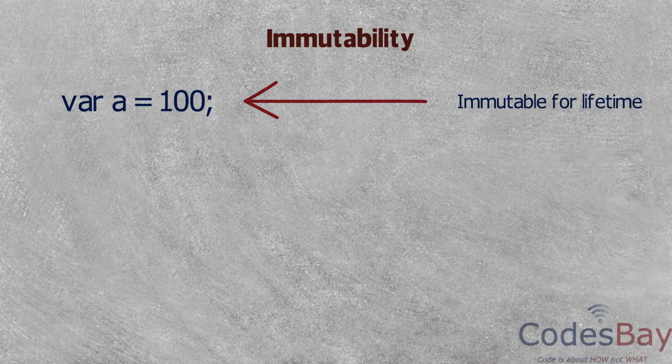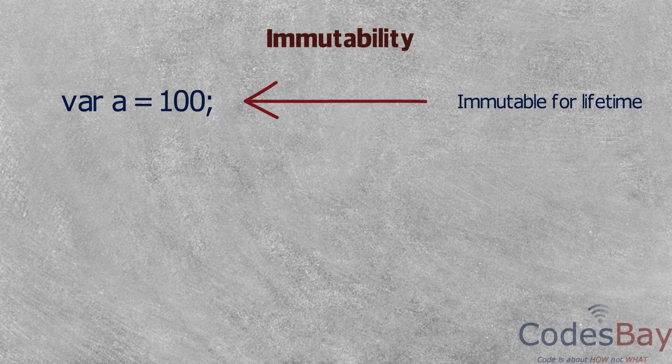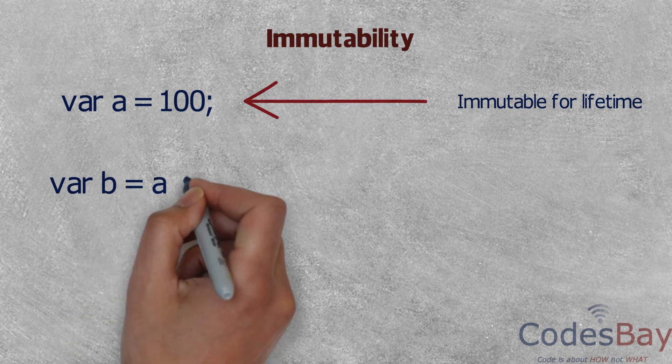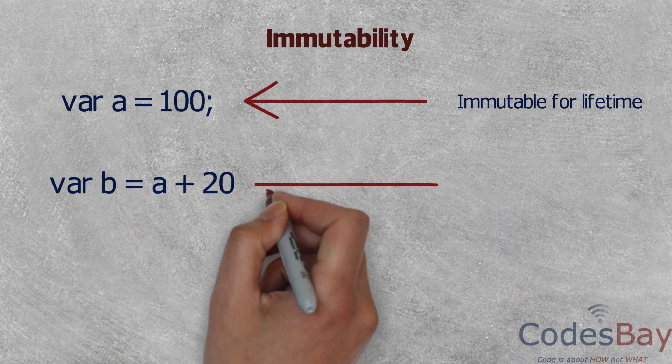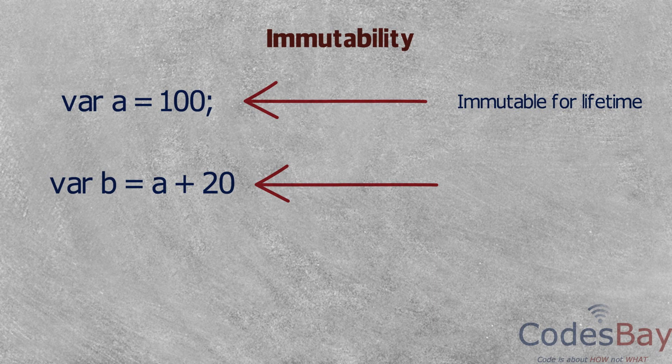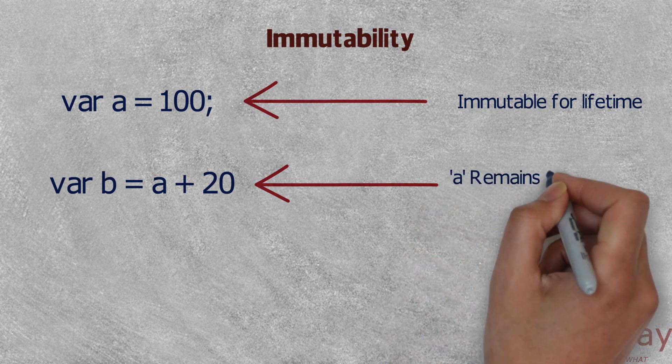Now you will ask a question, if I don't change the value of a, how will I modify? Well, to change the value, you need to create a new variable called b and you can do the desired operation to get a new value. But in this case also a remains unchanged.